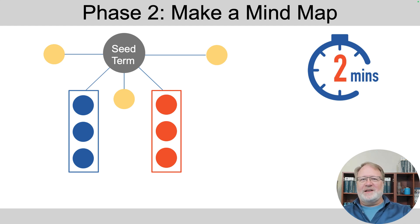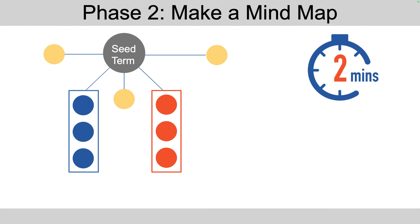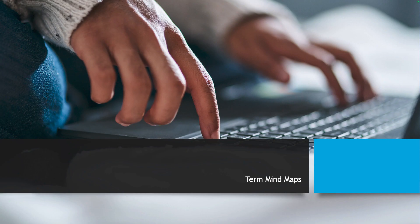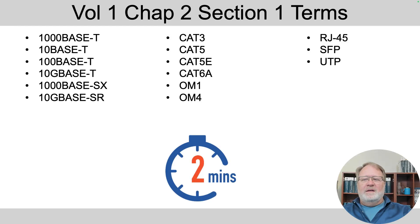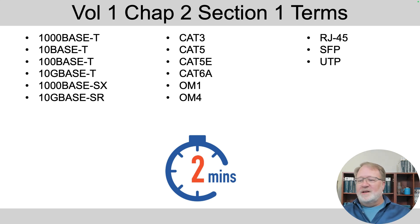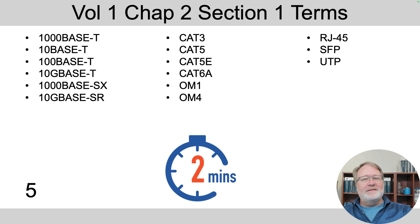I'll give you five seconds to get started and take two minutes to do this phase. Next up in phase three, now that you have your mind map, you can check our term list. I should have used all these in the related section video, but maybe not, so just be warned on that. Take this list, compare it to your mind map, take up to two minutes to update it, and that'll be it for your part of the activity.